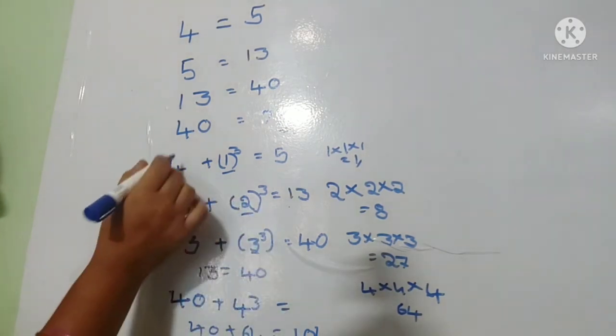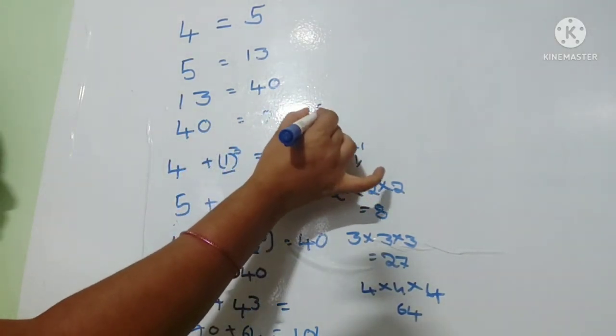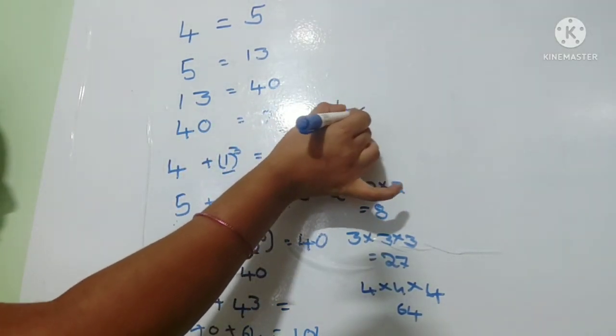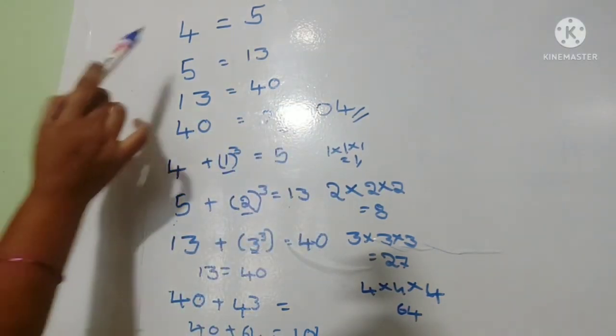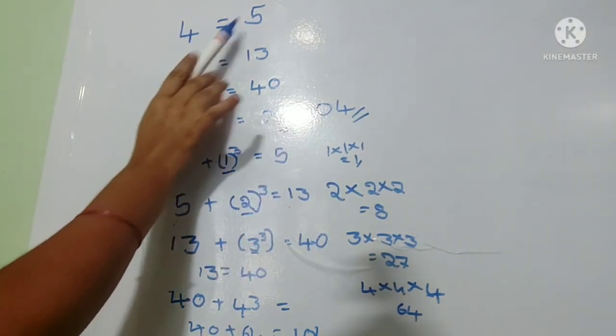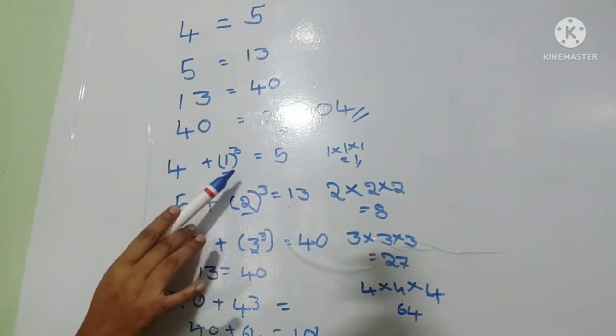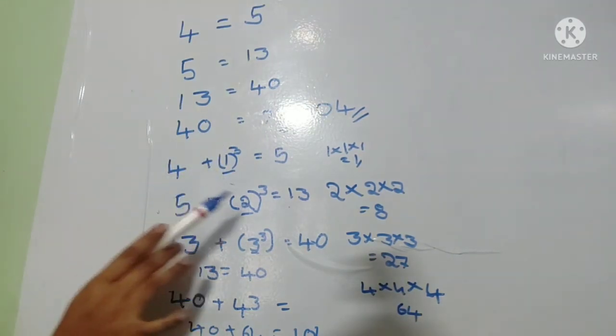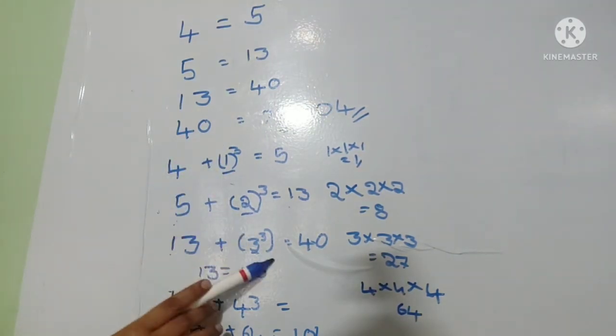One hundred and four, so forty value is one hundred and four. Forty equals one hundred and four. Friends, to summarize: four gets 1 cube added, five gets 2 cube, thirteen gets 3 cube, forty gets 4 cube. That's simple friends.